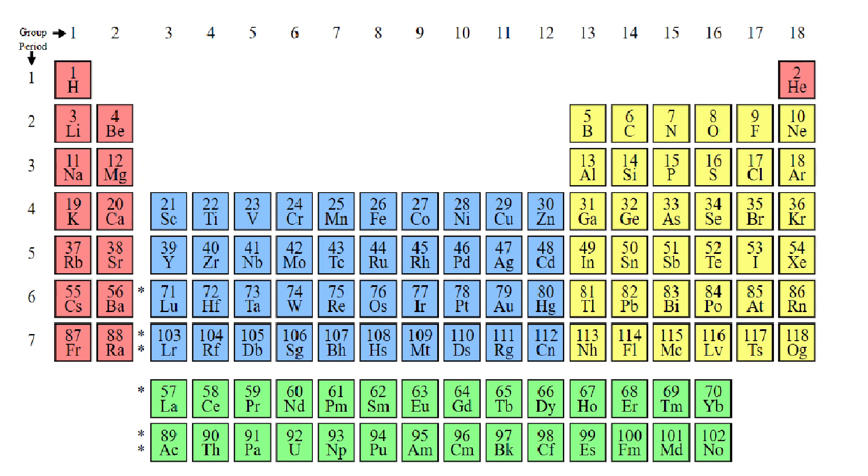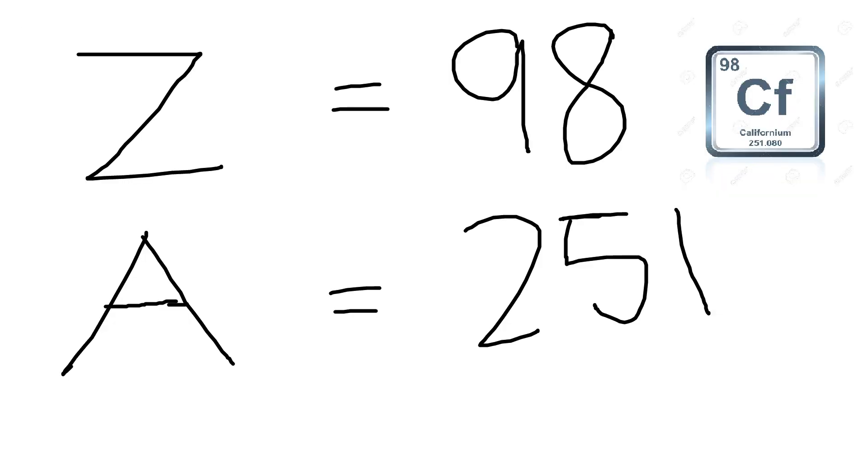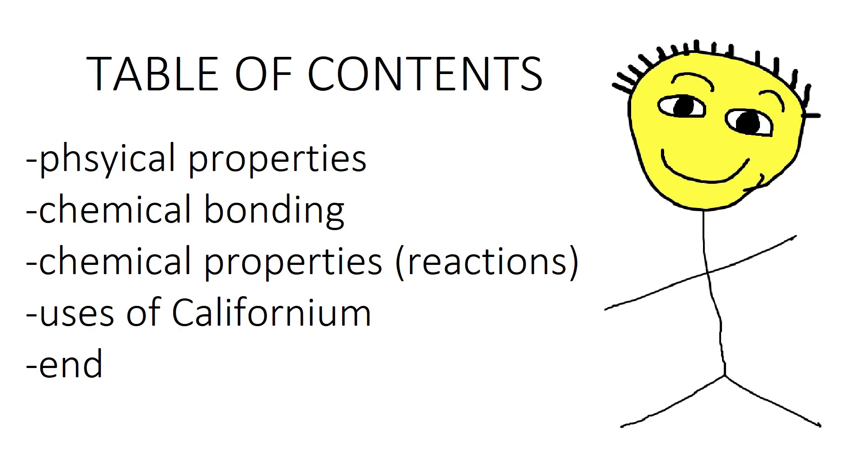Californium is found over here on the periodic table in the actinides group, on period 7. Californium has an atomic number of 98 and mass number of 251. Enough with the introduction, let's get straight into it.